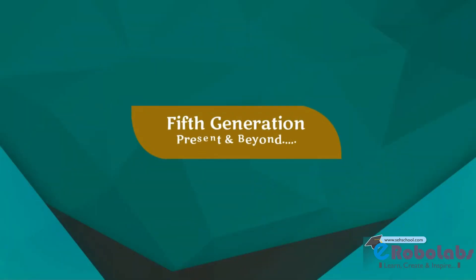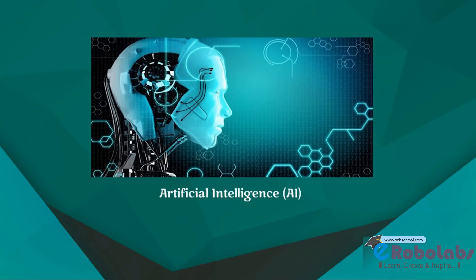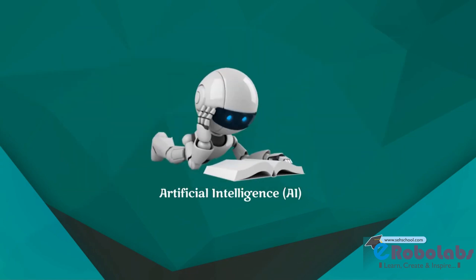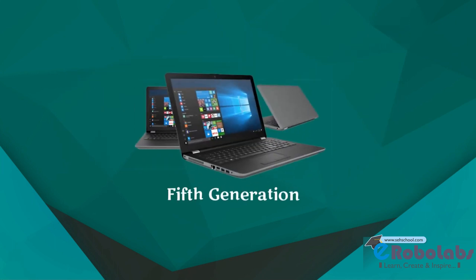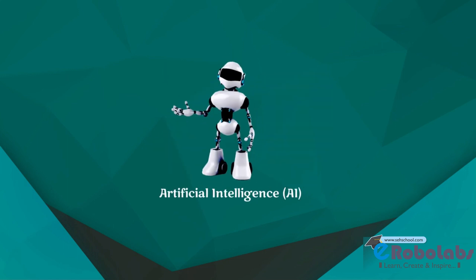Fifth generation, present and beyond. This generation is based on Artificial Intelligence, AI — a new technology that makes computers think like humans. This generation is still in development. The goal is to develop devices which respond to natural language input and are capable of learning and self-organization. There are some applications such as robotics that are basically being used today.